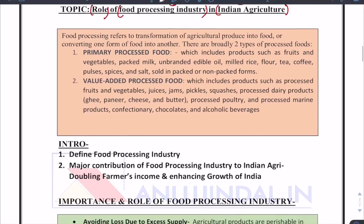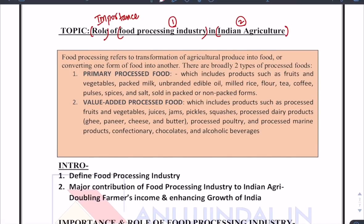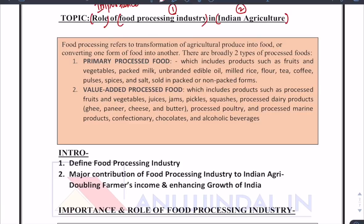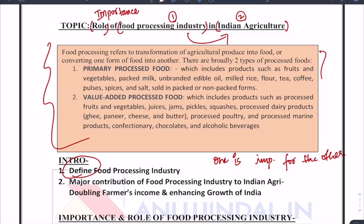The introduction is going to focus on two things, and in every essay I discuss this same structure. First, we will define one of the keywords — the most important one. Secondly, we explain how these keywords are connected or how one is important for the other. So here, first of all, we define food processing industry.